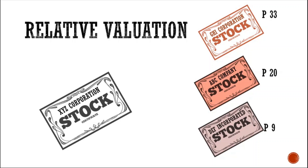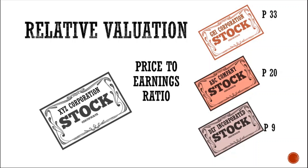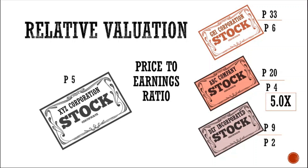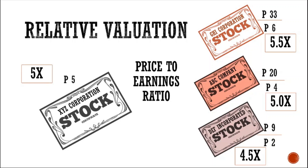As such, we need a way to scale them to make them comparable. The way to scale them is to use a multiple, the most popular of which is the price-to-earnings ratio — the ratio of stock price to earnings per share. If the earnings per share of the comparables are 4 pesos, 2 pesos, and 6 pesos respectively, we divide the stock prices by these values. The P/E ratios are 5x for ABC Company, 4.5x for DEF Incorporated, and 5.5x for GHI Corporation.